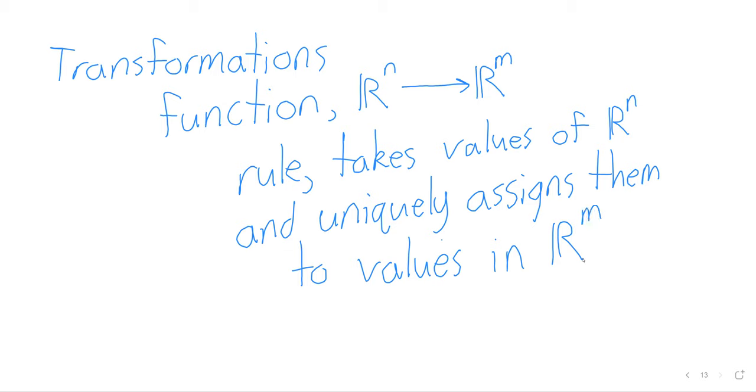It takes values of R^n and uniquely assigns them to values in R^m. And by uniquely, we can't have one vector that's being transformed or being sent to two different places. Other than that, this rule can be whatever we want.